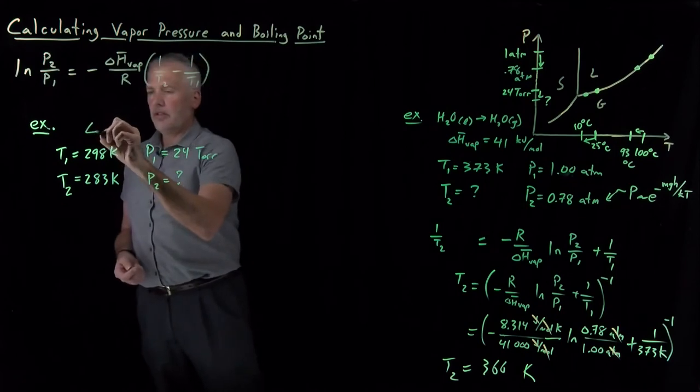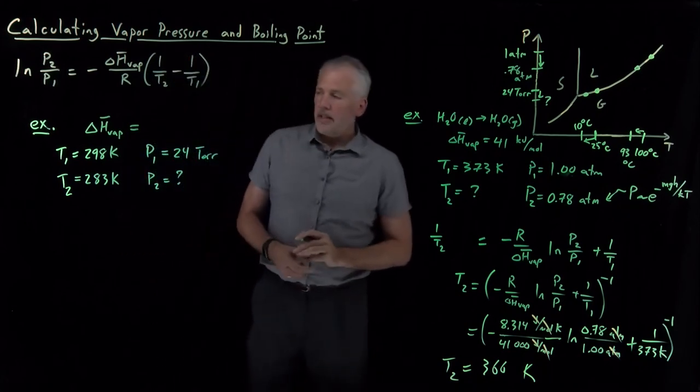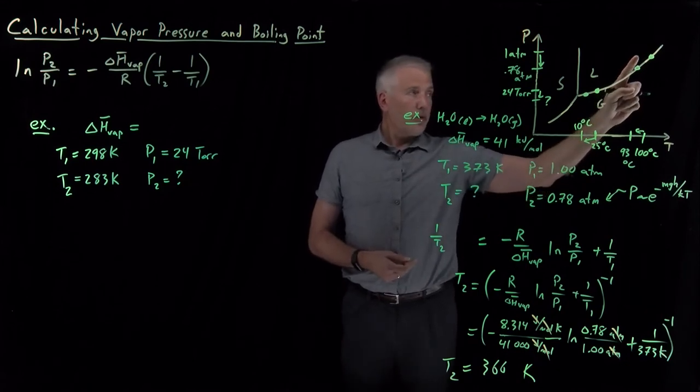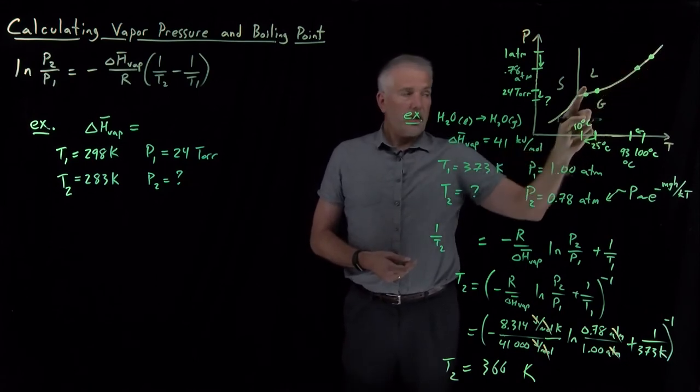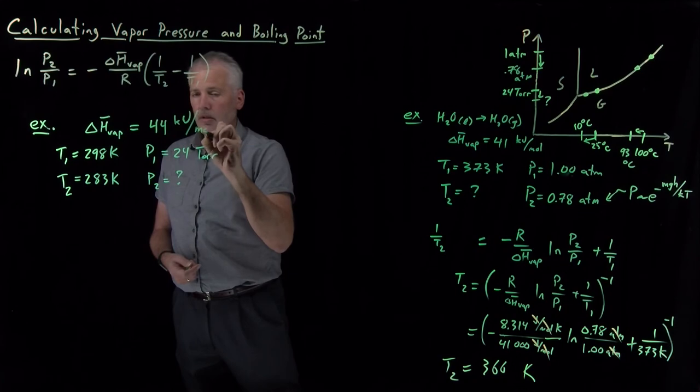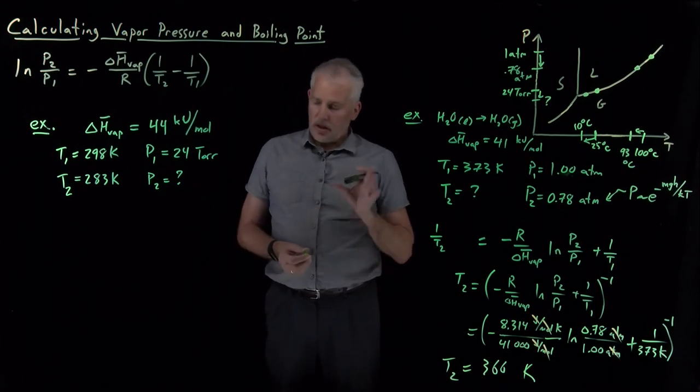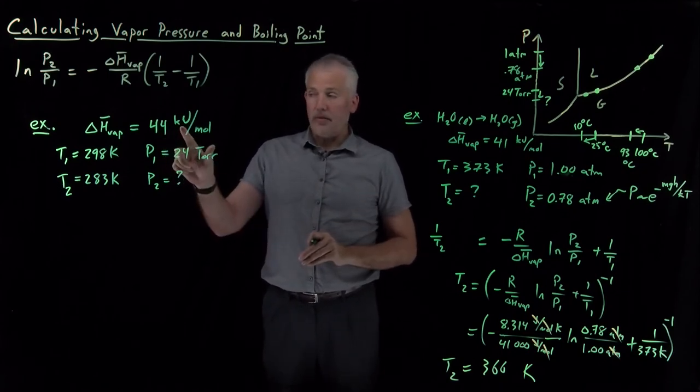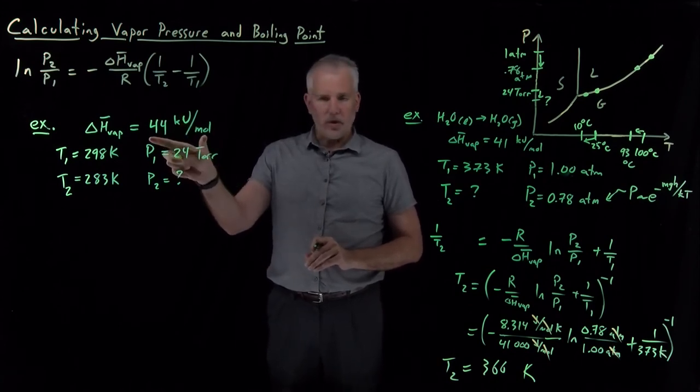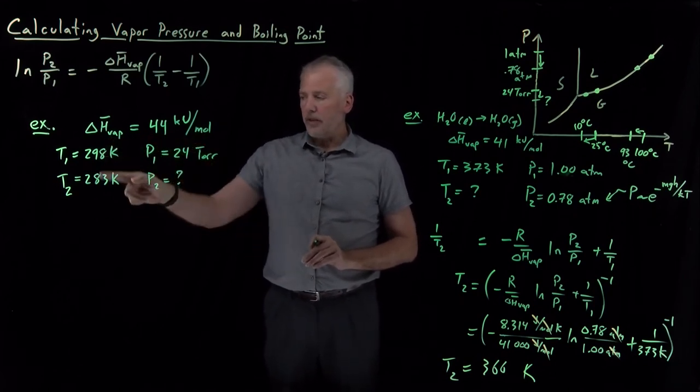And we also need still to know the enthalpy of vaporization for water. That's actually not the same as it is over here. The enthalpy of vaporization cost me 41 kilojoules per mole to boil water up near its boiling point. It cost me a little bit more. It cost me about 44 kilojoules per mole to evaporate water down near room temperature.